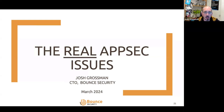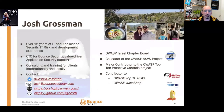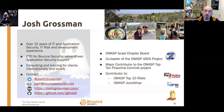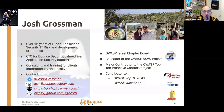So before I dive into that, a little bit about me. My name is Josh Grossman. I work as a CTO consultant at a company called Bounce Security. We specialize in software security consulting, working with lots of organizations both locally here in Israel and around the world, helping them to build software more securely — working with developers and security people tasked with building software securely. I've also delivered various talks and training at OWASP Global Conferences and at Black Hat USA.